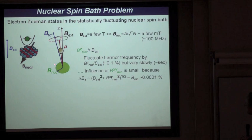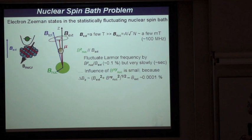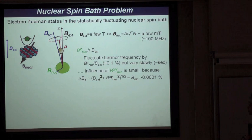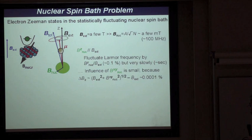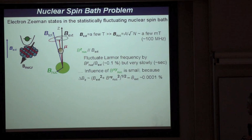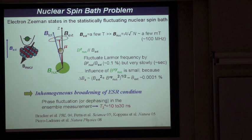The origin of T2-star is believed to be due to fluctuation of the nuclear spin bath. If there is a fluctuation of the nuclear spin bath along the z-axis, this fluctuation is very tiny — expected to be about 0.1 percent compared to the externally applied magnetic field — but it can still fluctuate the Zeeman energy or Larmor precession frequency, broadening the ESR conditions. The expected T2-star value from this mechanism would be 10 to 30 nanoseconds, which is comparable but still smaller than what we observed.